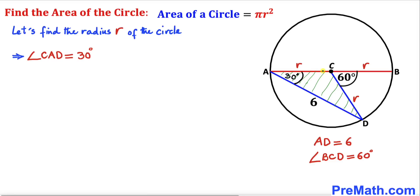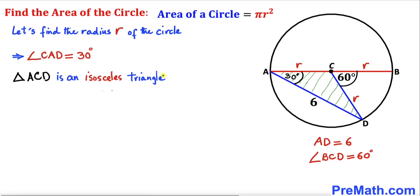So our angle CAD turns out to be 30 degrees. Now let's focus on triangle ACD. We know this side is r and this side is r as well, so triangle ACD is an isosceles triangle because both side lengths are equal.